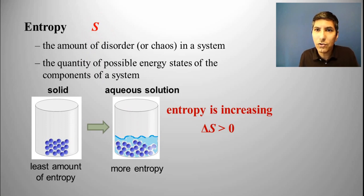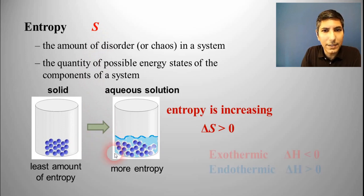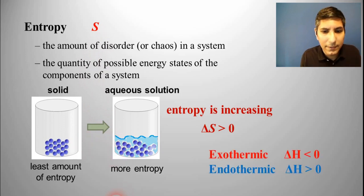Just like we use the letter H to talk about enthalpy, well, S is for entropy. Now, if this process is taking place, and the system is releasing heat, the surroundings are getting hotter or warmer, then we say it's exothermic. And the delta H of that process is going to be a negative value.